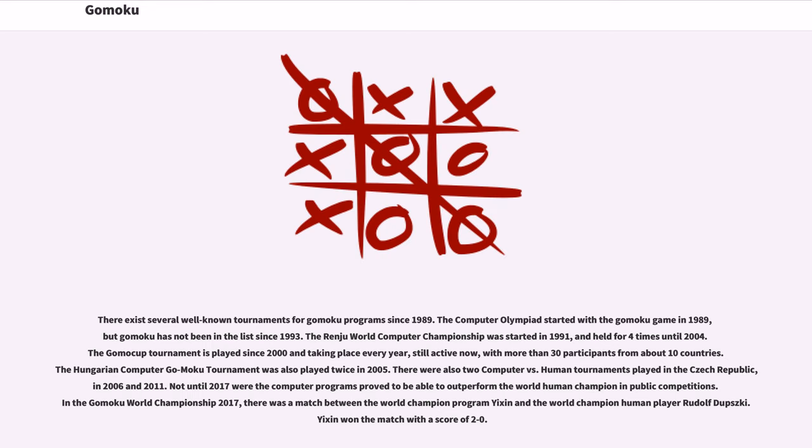There exist several well-known tournaments for Gomoku programs since 1989. The Computer Olympiad started with the Gomoku game in 1989, but Gomoku has not been in the list since 1993. The Renju World Computer Championship was started in 1991, and held four times until 2004. The Gomoku tournament is played since 2000 and taking place every year, still active now, with more than 30 participants from about 10 countries.